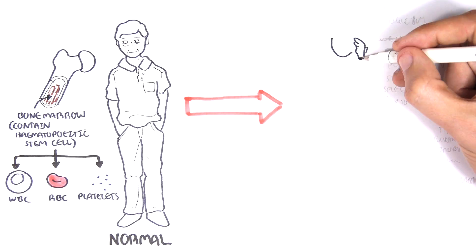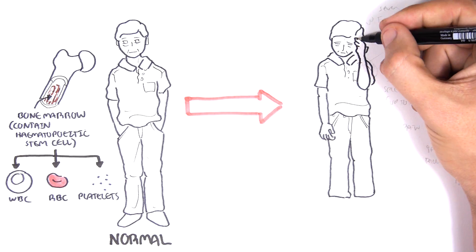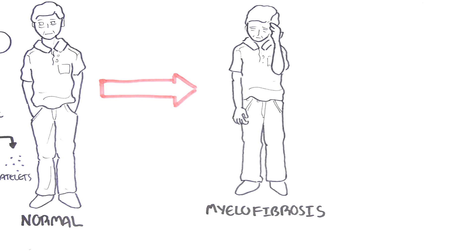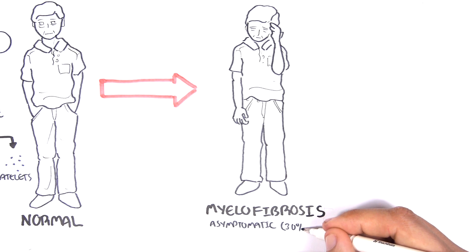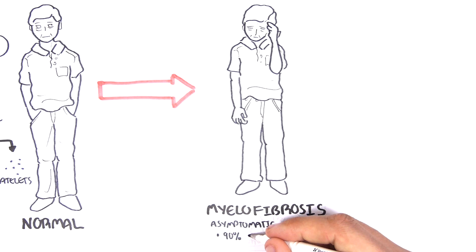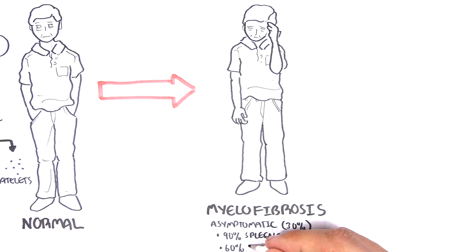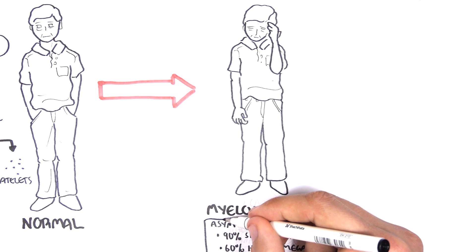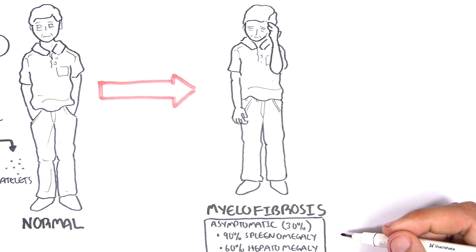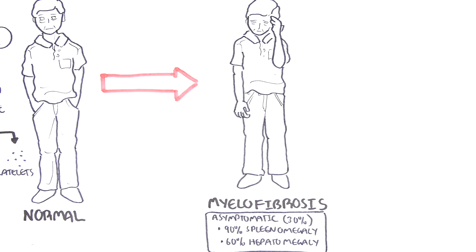Some people can develop primary myelofibrosis due to some factors, but mainly the exact cause is unknown. Primary myelofibrosis is myelofibrosis that is not secondary to another disease. Primary myelofibrosis is a myeloproliferative disorder on its own. A lot of people with primary myelofibrosis are asymptomatic, about 30%, but the majority of these people who are asymptomatic have splenomegaly, enlarged spleen, or hepatomegaly, enlarged liver.